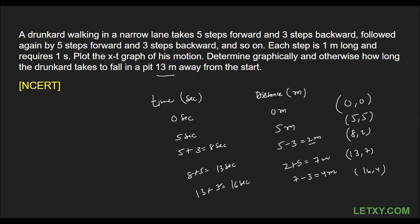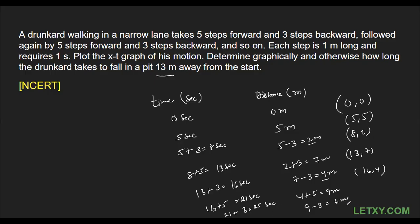Next, he moves five steps forward: four plus five equals nine meters, and sixteen plus five equals twenty-one seconds. Then he comes back three steps backward: nine minus three equals six meters, and twenty-one plus three equals twenty-four seconds.